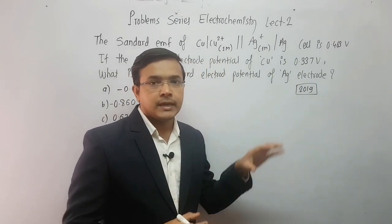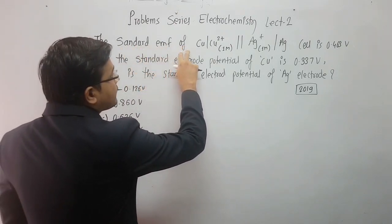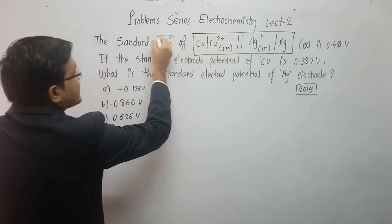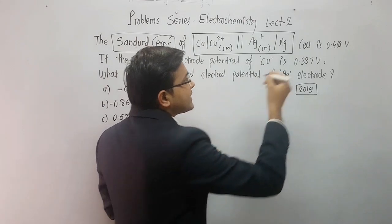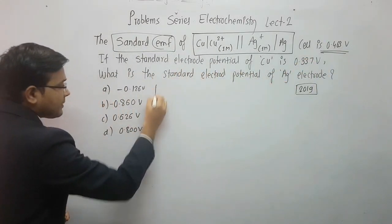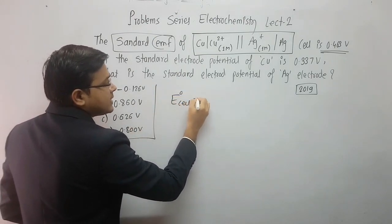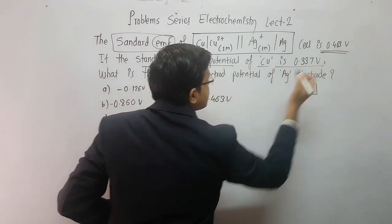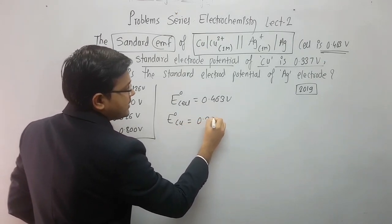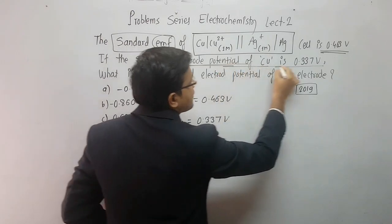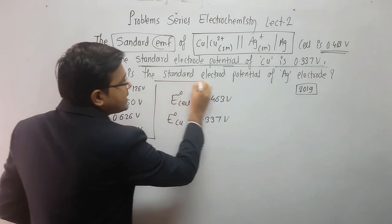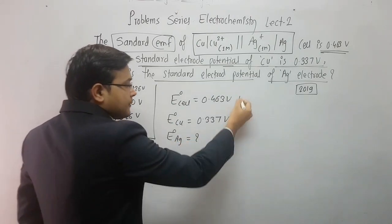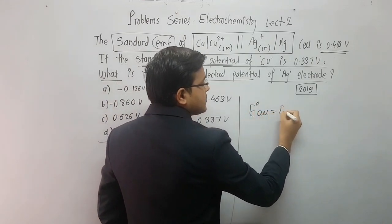The third MCQ, also from 2019 electrochemistry: the standard EMF of the Cu | Cu²⁺ || Ag⁺ | Ag cell is 0.463 volt. If the standard electrode potential of copper E0(Cu) = 0.337 volt, calculate the standard electrode potential of silver E0(Ag). This is straightforward using the cell potential formula.